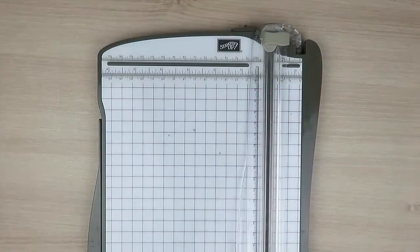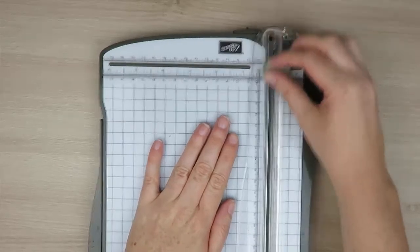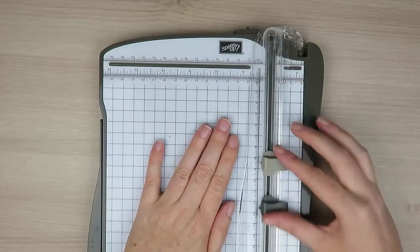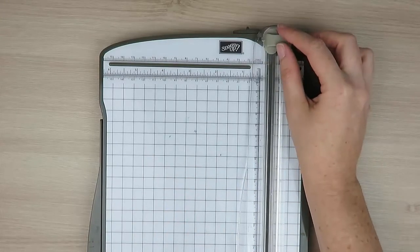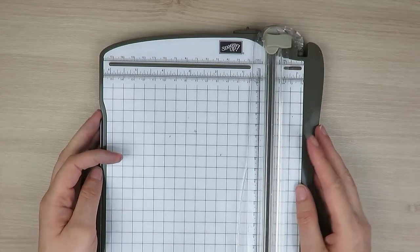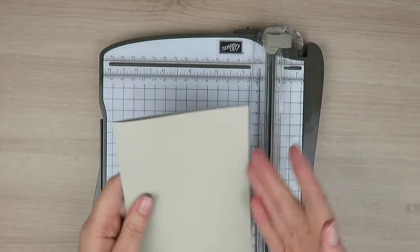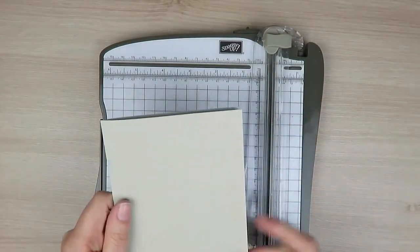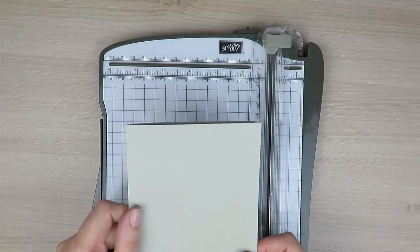The other place that you can utilize your bone folder is with your Stampin' Trimmer. Now your Stampin' Trimmer comes with the cutting blade and with the scoring blade, but I also like to use my bone folder to create some deeper score lines, particularly some decorative accents on my card. So I'd like to show you how you can add some decorative score lines onto my card here, which is very similar to dry embossing.